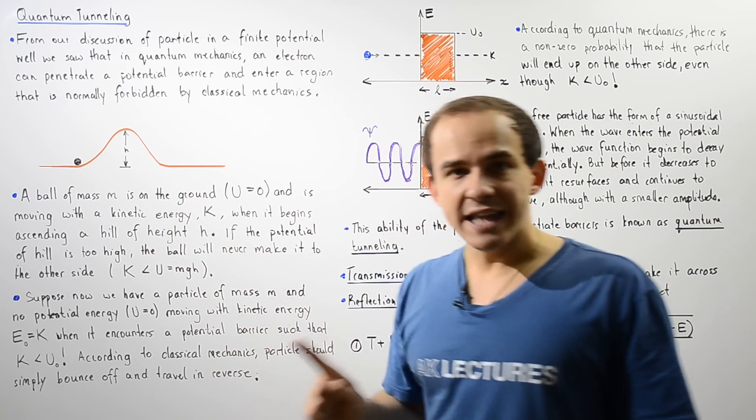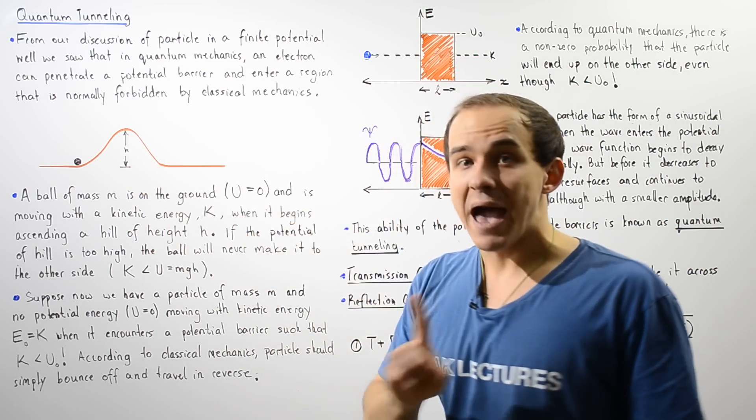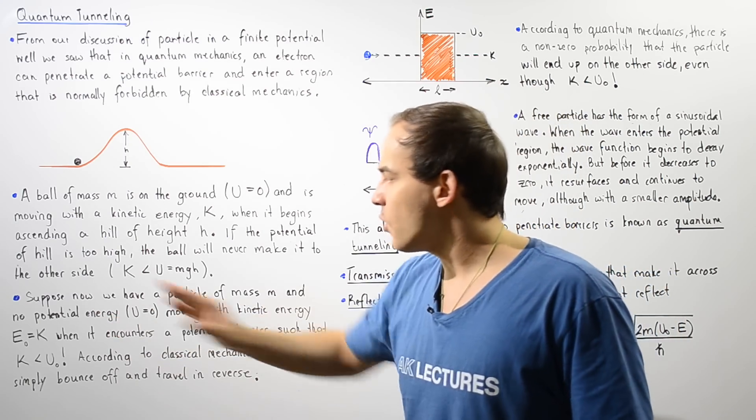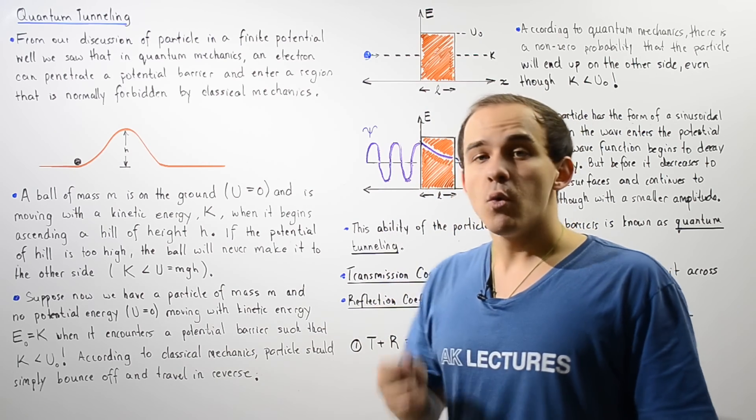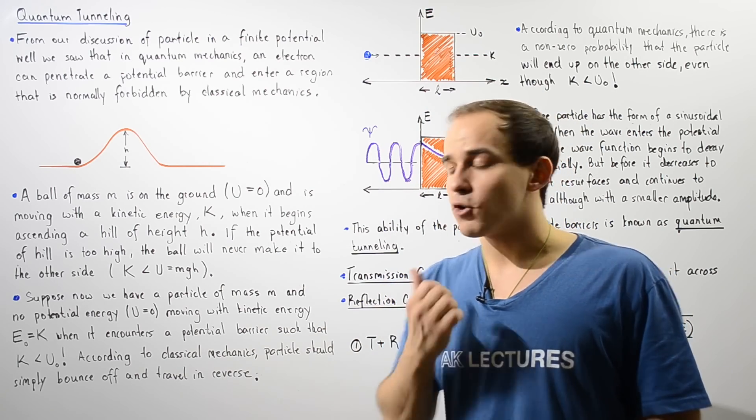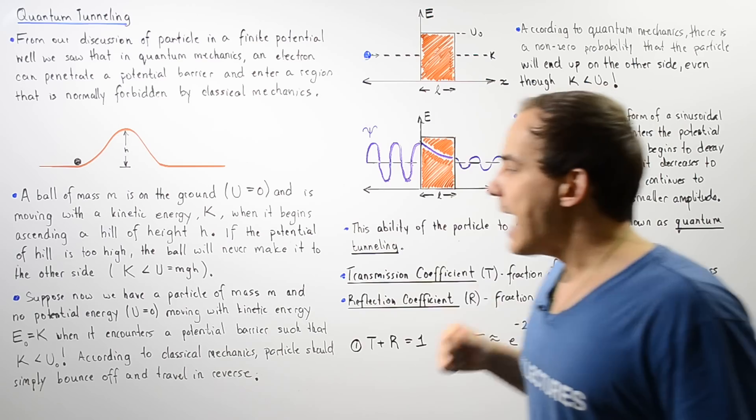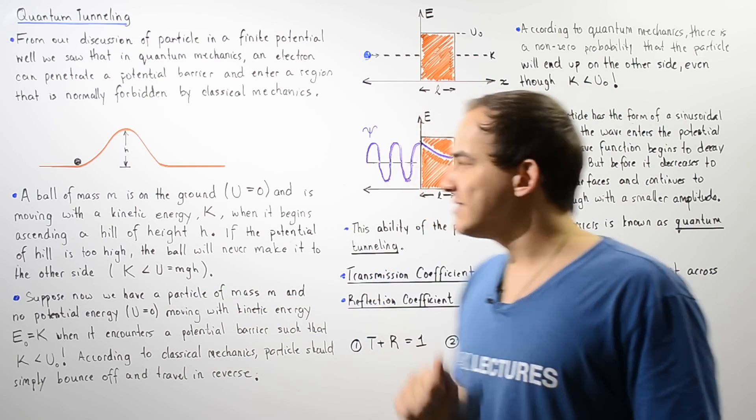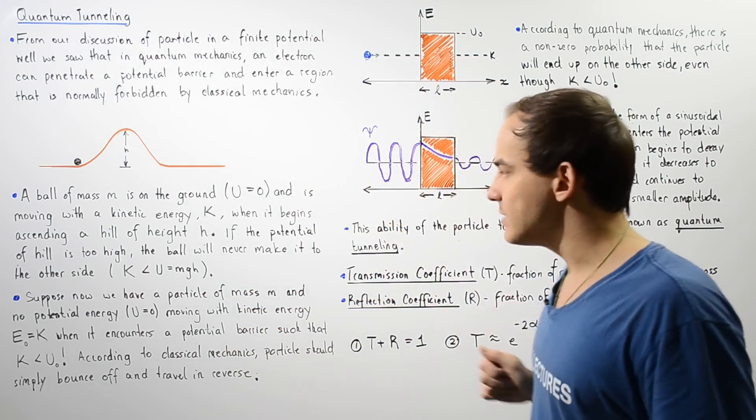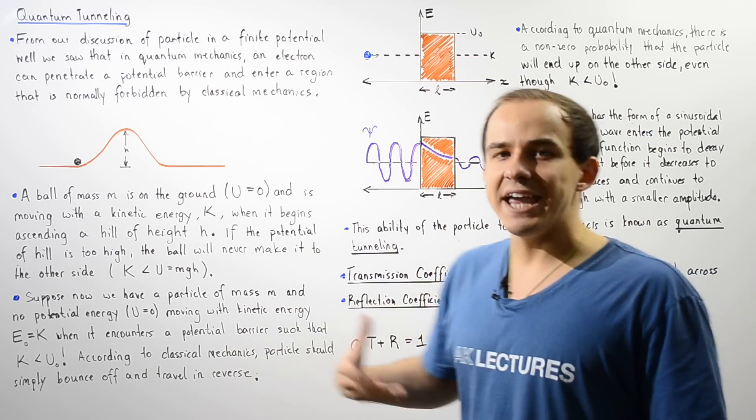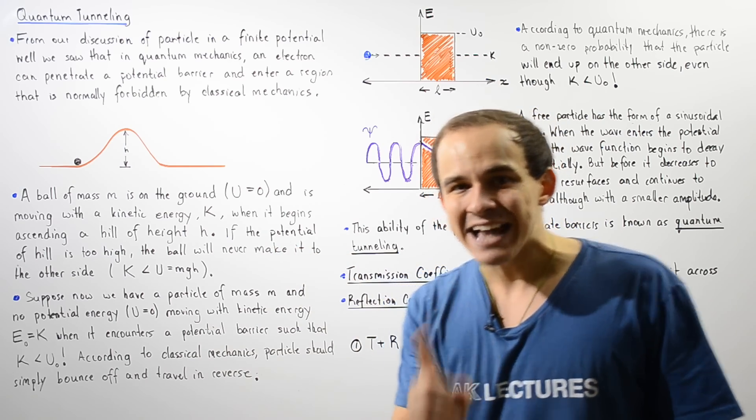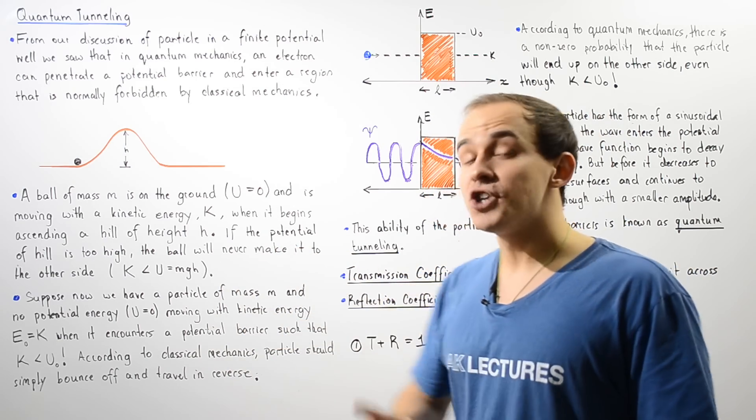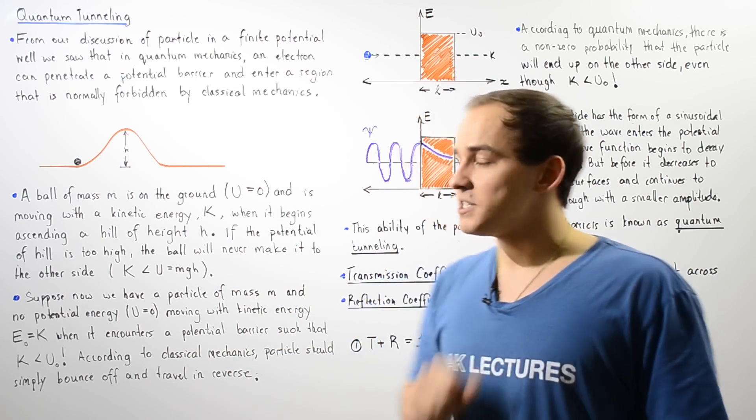So once again, suppose now instead of looking at this macroscopic object, let's suppose we have a microscopic object. So suppose we have a particle of mass m, for example an electron, and the electron has no potential energy as in this case and it's moving with a kinetic energy K when it encounters a potential, but in this case we're dealing with electric potential.